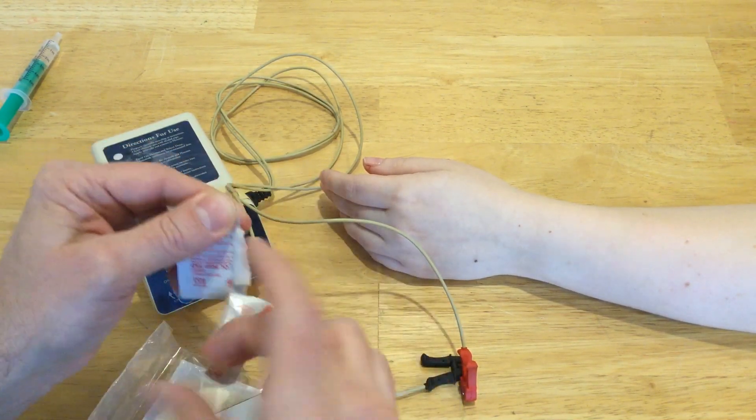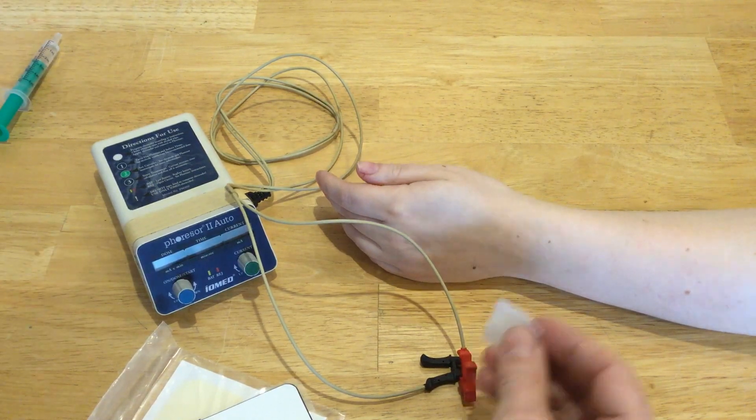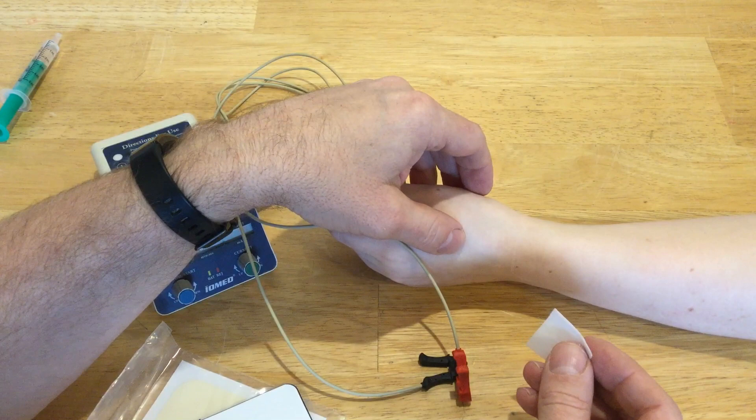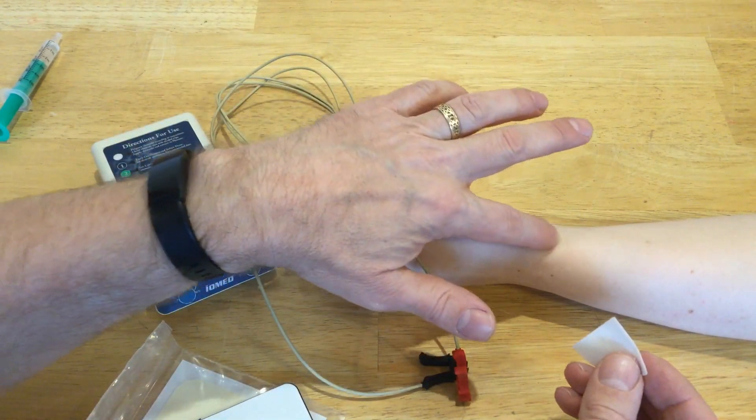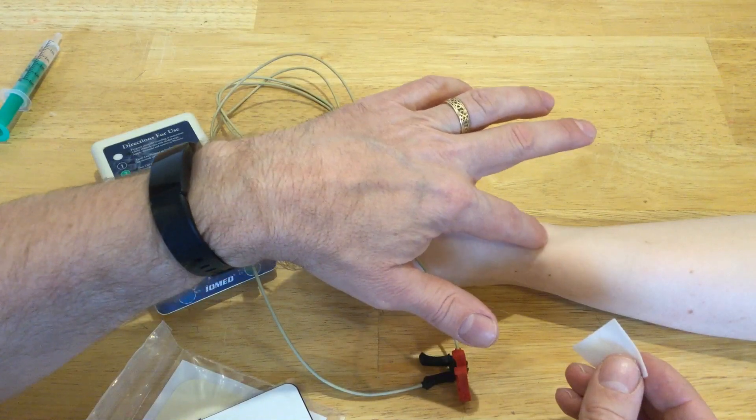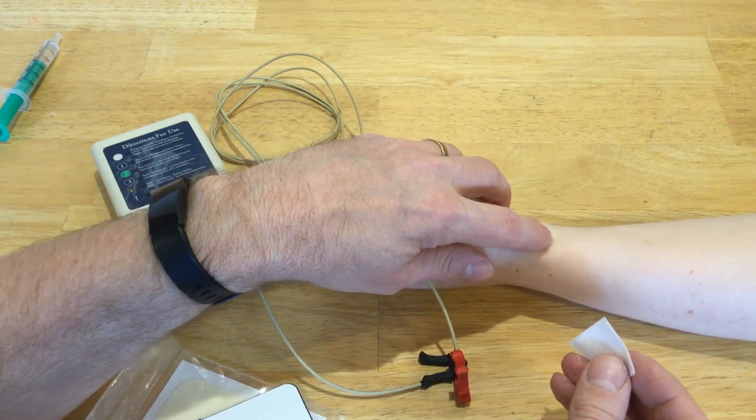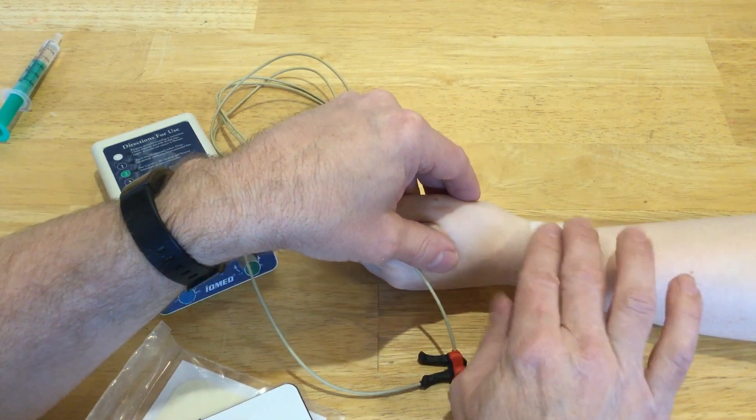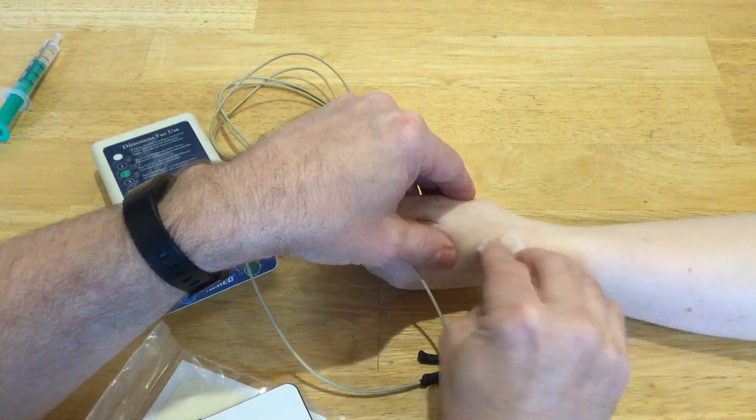You would definitely want to clean the skin with an alcohol wipe before you apply your iontophoresis. In this case, I'm going to pretend that my client has deQuervain's disease - that's where the tendons in the first dorsal compartment are not sliding smoothly. I'm just going to clean that with my alcohol wipe.